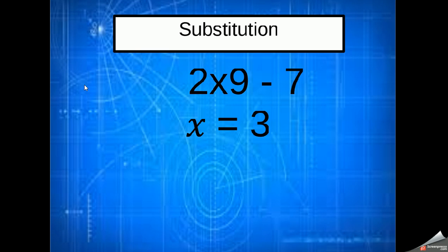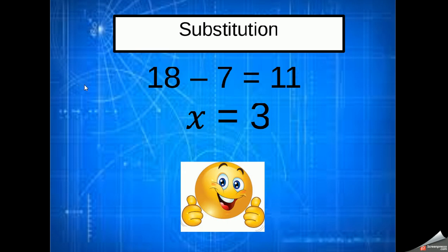So 3 squared I know is 9. And then I can take this from here. 2 times 9 is 18, 18 take away 7 is 11, and there again we've got our answer when we substitute x for 3.